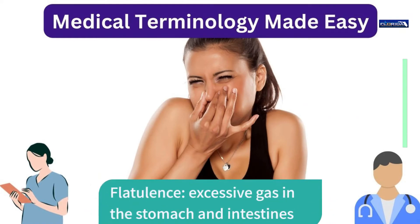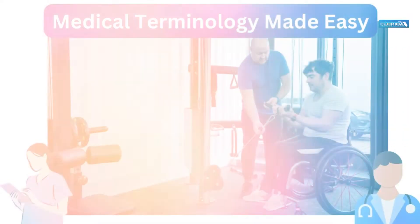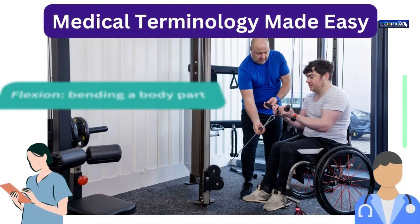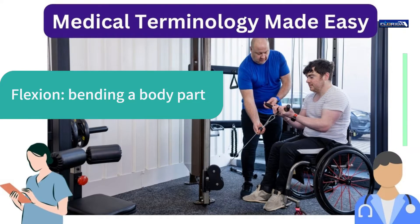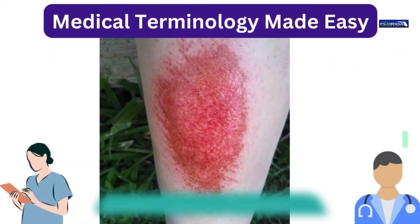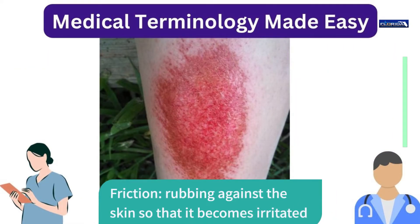Flatulence: excessive gas in the stomach and intestines. Flexion: bending a body part. Friction: rubbing against the skin so that it becomes irritated.